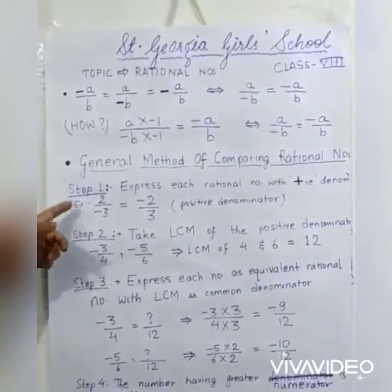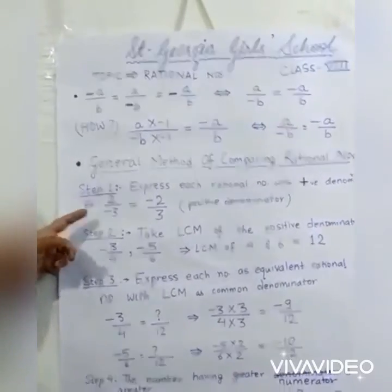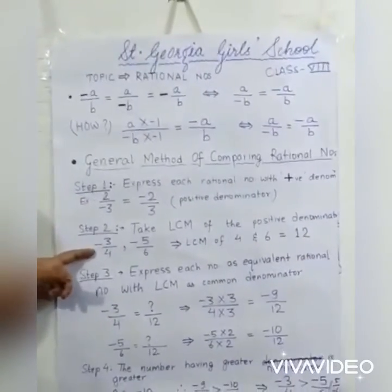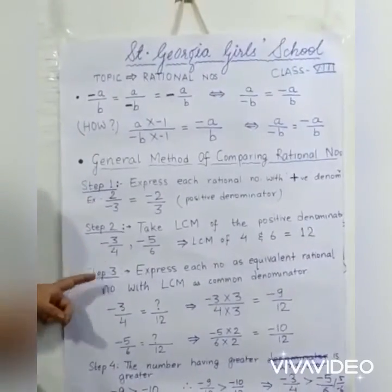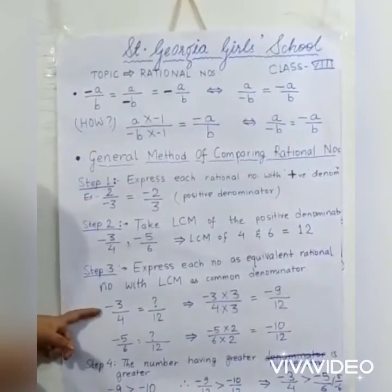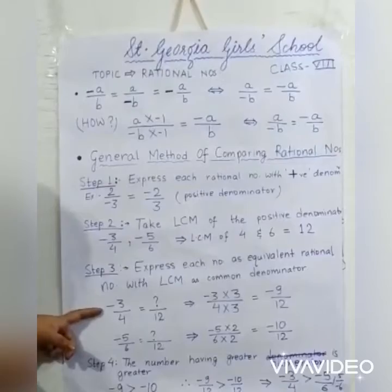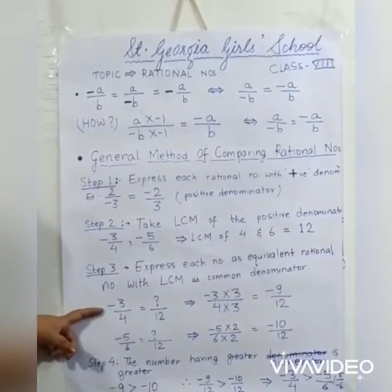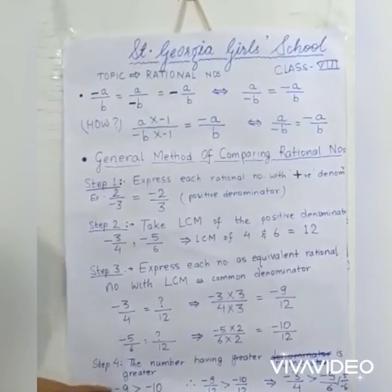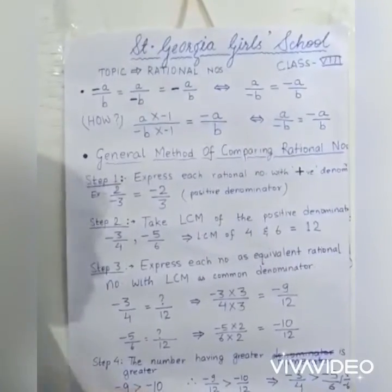Quick recap: first, express each rational number in standard form with positive denominator; second, take the LCM of the denominators; third, convert to equivalent form with LCM as common denominator; fourth, compare the numerators.